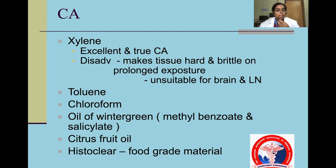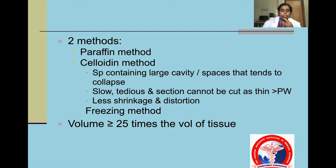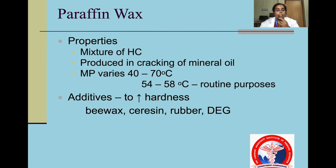Impregnation fills all the natural cavities, spaces and interstitium of tissue and within the cell constituents, and this is embedded with a paraffin block. This helps to cut the tissue into thin sections with the help of a microtome. Two methods are the paraffin method, celloidin method, and freezing method. The volume should be equal to or more than 25 times the volume of the tissue.